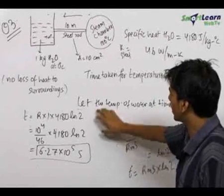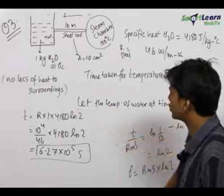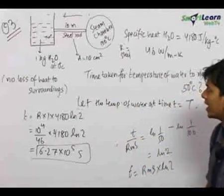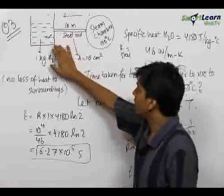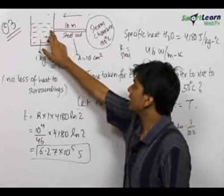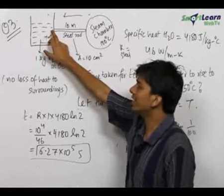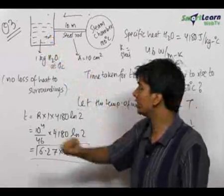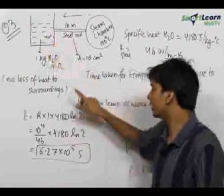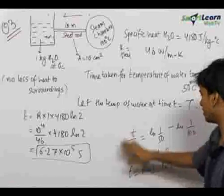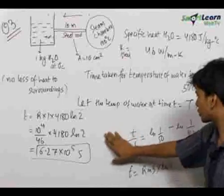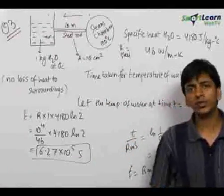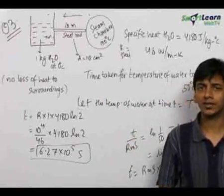The important thing to note in this question is that we had to integrate because the temperature at the water end keeps changing, meaning the heat current is not constant. Therefore we integrate to find the change in temperature corresponding to the heat current. The final answer is 6.27 × 10⁵ seconds.